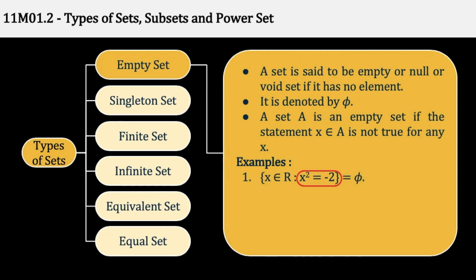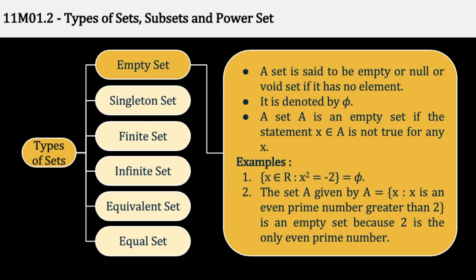Hence, यह set equal to φ है, मतलब null set। Second example: the set A given by A = {x : x is an even prime number greater than 2}. This is an empty set because 2 is the only even prime number — उससे बड़ा या छोटा कोई और even prime number होता ही नहीं है।